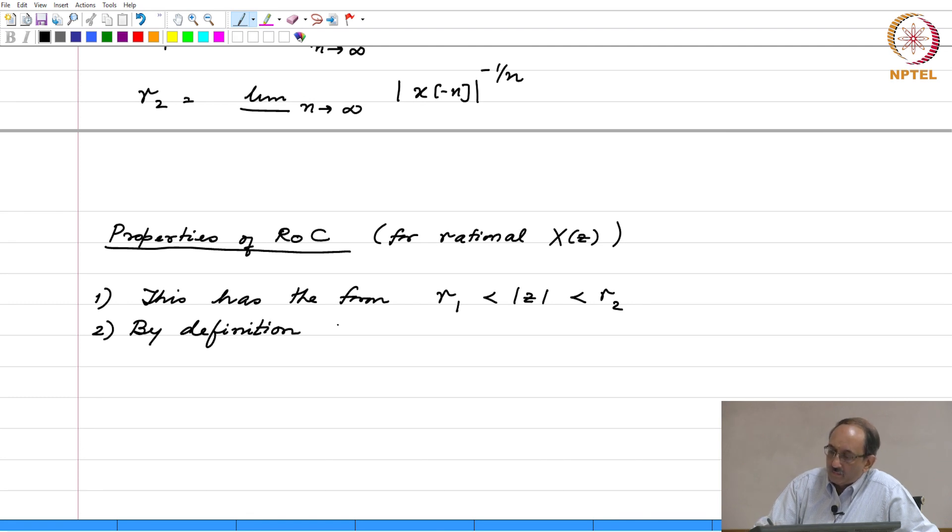By definition, ROC cannot contain poles.